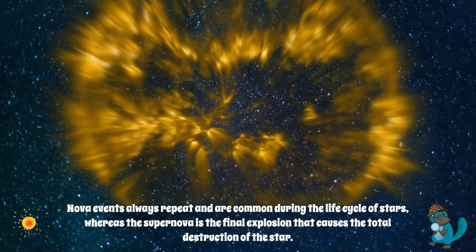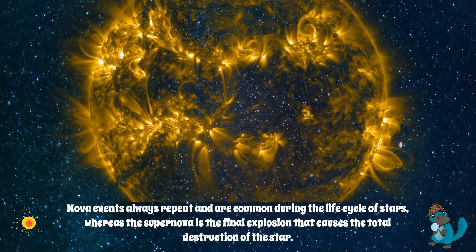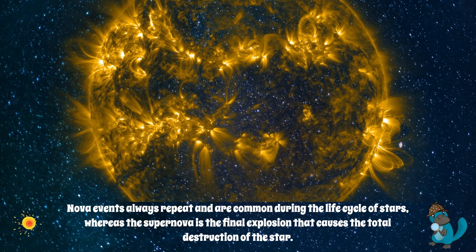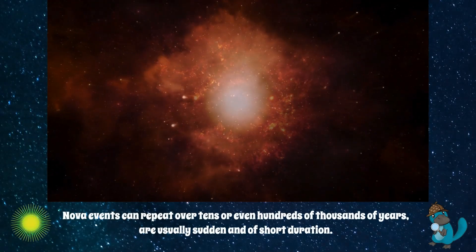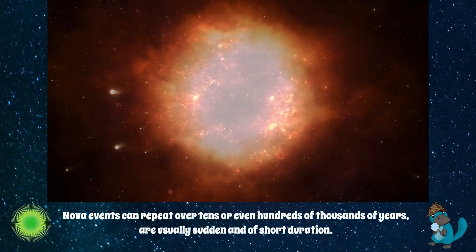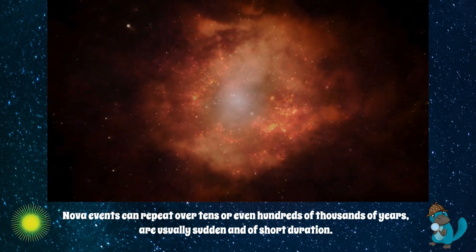Nova events always repeat and are common during the life cycle of stars, whereas the supernova is the final explosion that causes the total destruction of the star. Nova events can repeat over tens or even hundreds of thousands of years, are usually sudden and of short duration.